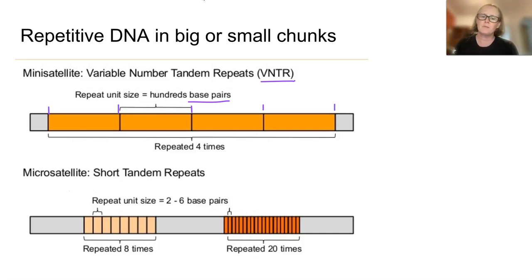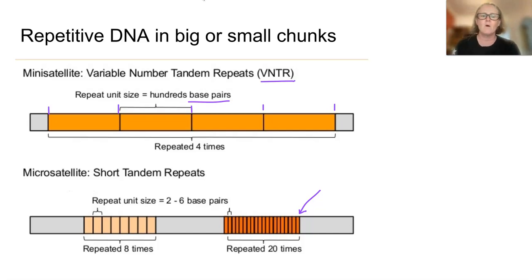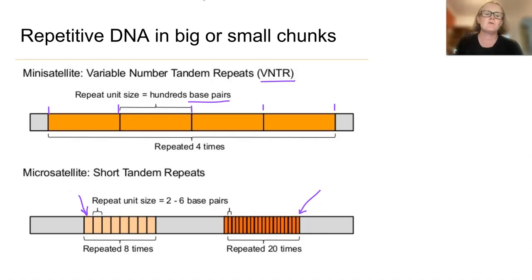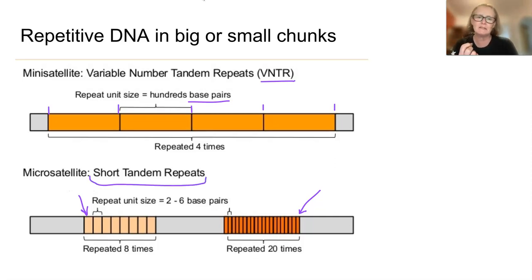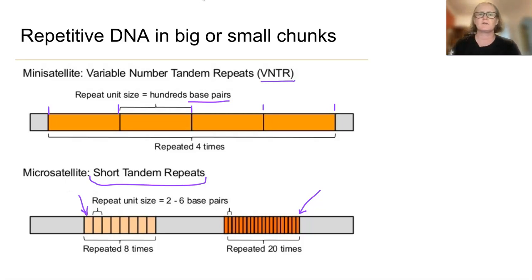Or the number of base pairs in the repeats could be tiny — it could be just two base pairs, like AG repeated up to 20 times, or six base pairs like ATCGTC repeating over and over. If it were short, it would be called a short tandem repeat, or STR. So STRs are short repeating sections and VNTRs are big repeating sections. For our purposes, what is important is that we have repeating sections of DNA with variation in repeat number.